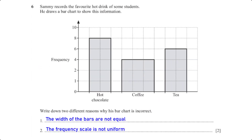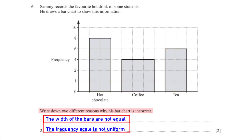Sammy records the favourite hot drink of some students and draws a bar chart to show this information. Write down two different reasons why his bar chart is incorrect. The first reason is that the width of the bars are not the same. Another reason is that the frequency scale is not uniform.